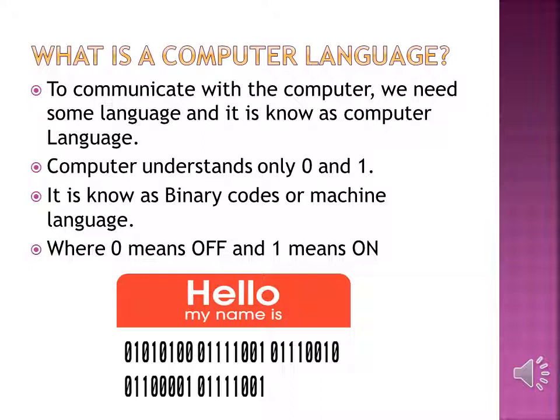The language made up of zeros and ones is known as machine language or binary code, where zero means OFF and one means ON. So if you type 'Hello, my name is so-and-so' in Microsoft Word, that will be interpreted as a string of zeros and ones by the computer. I have displayed a picture here — whatever you type in letters or numbers is interpreted by the computer as a string of zeros and ones. A string is a collection of zeros and ones put together.